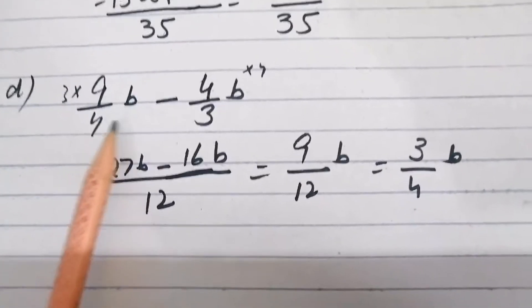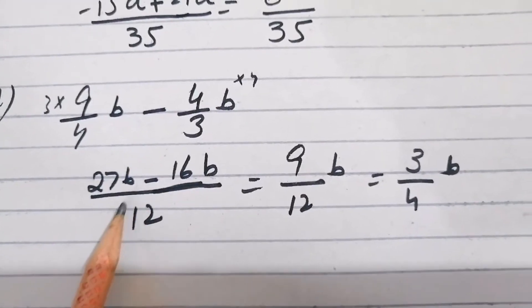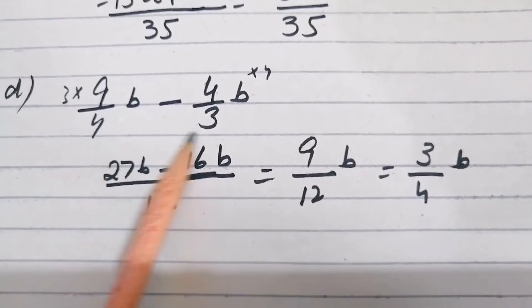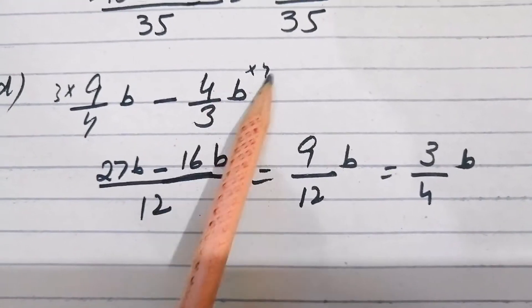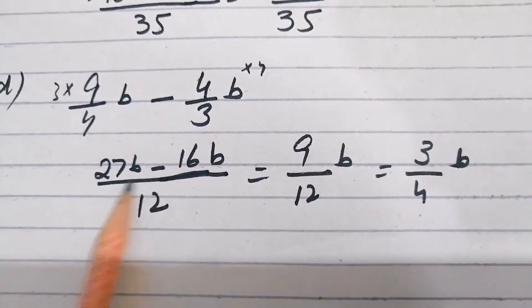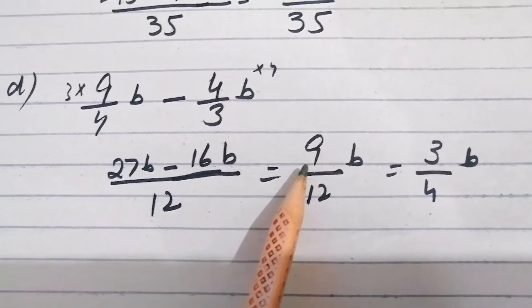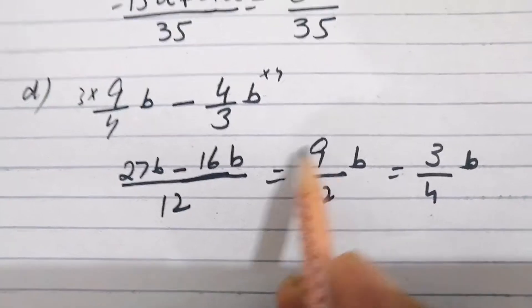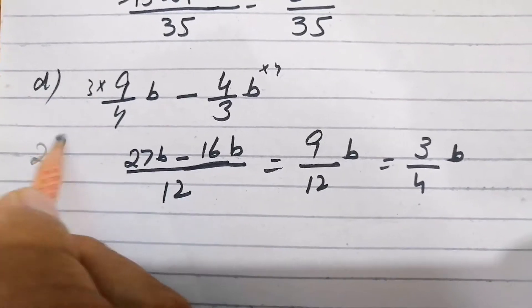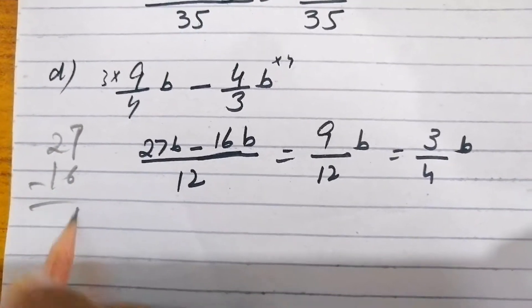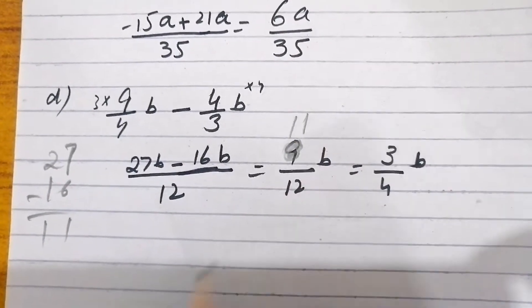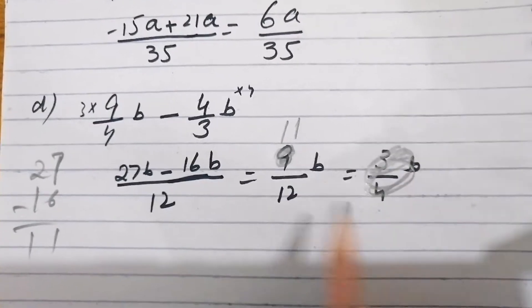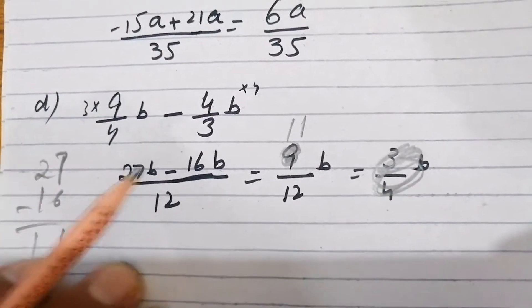Part d: 9/4b - 4/3b. Taking LCM of 4 and 3, which is 12. Multiplying: 9 × 3 = 27 over 12, and 4 × 4 = 16 over 12. So 27 minus 16 = 11, giving 11/12b as the answer.